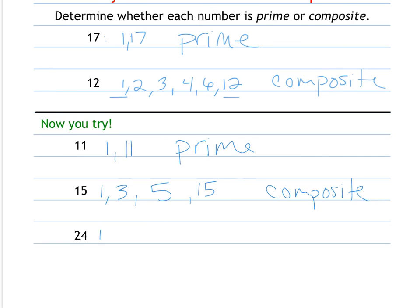24 has factors of 1 times 24, 2 times 12, 3 times 8, 4 times 6. That is also composite because it has many factors more than 1 and itself.